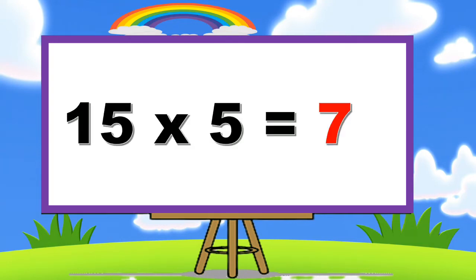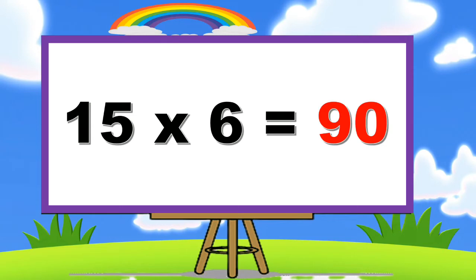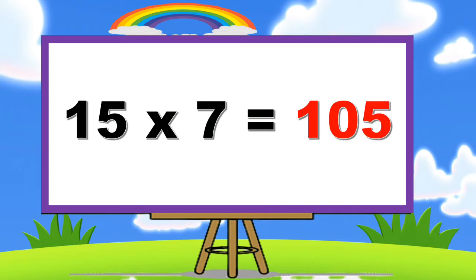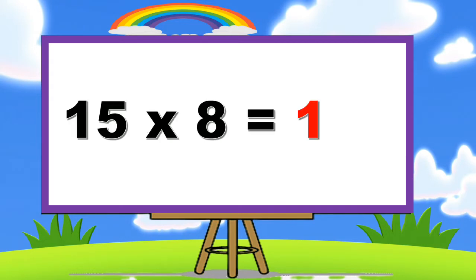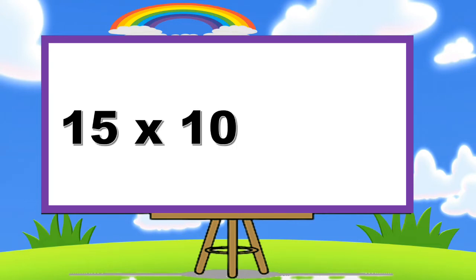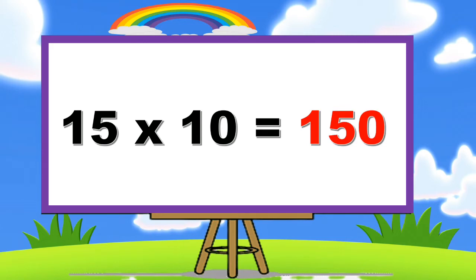Fifteen five's are seventy-five. Fifteen six's are ninety. Fifteen seven's are one hundred five. Fifteen eight's are one hundred twenty. Fifteen nine's are one hundred thirty-five. Fifteen ten's are one fifty.